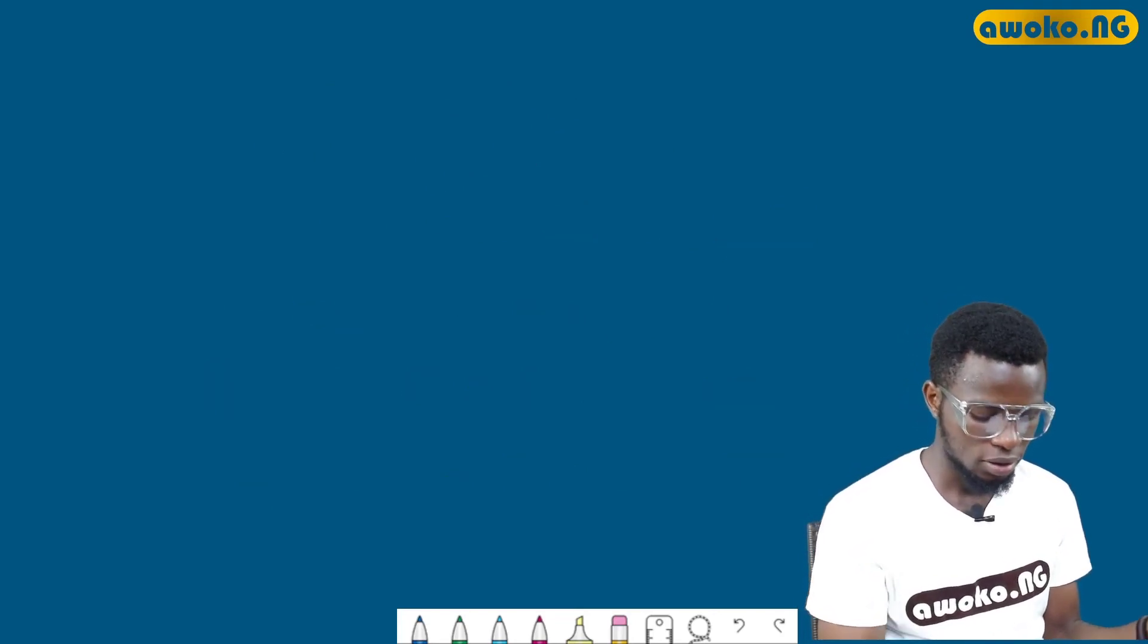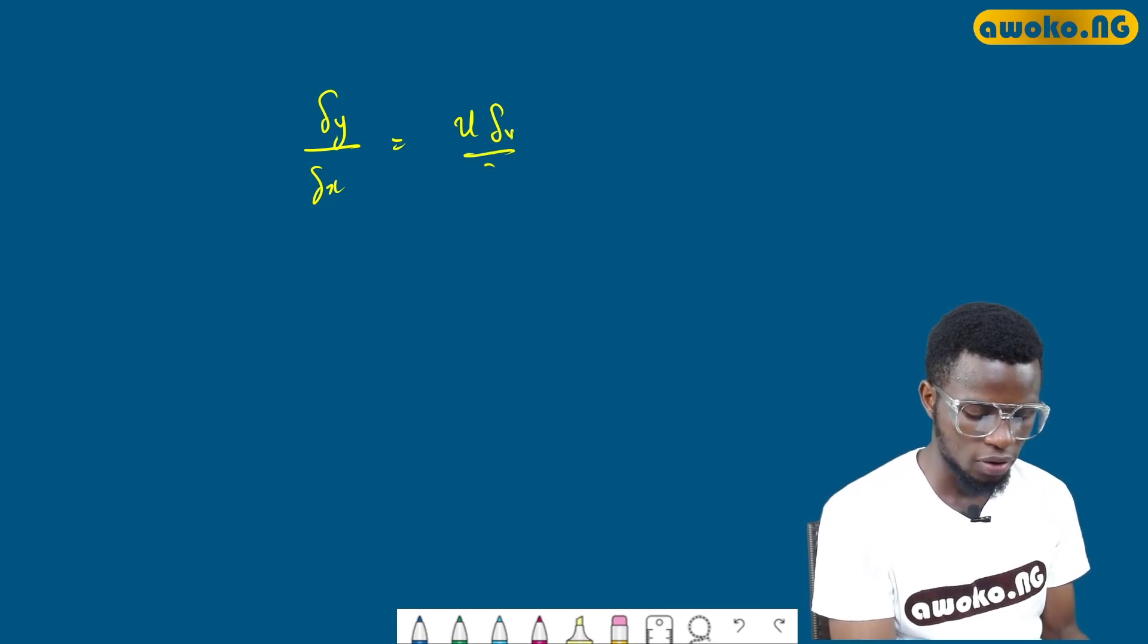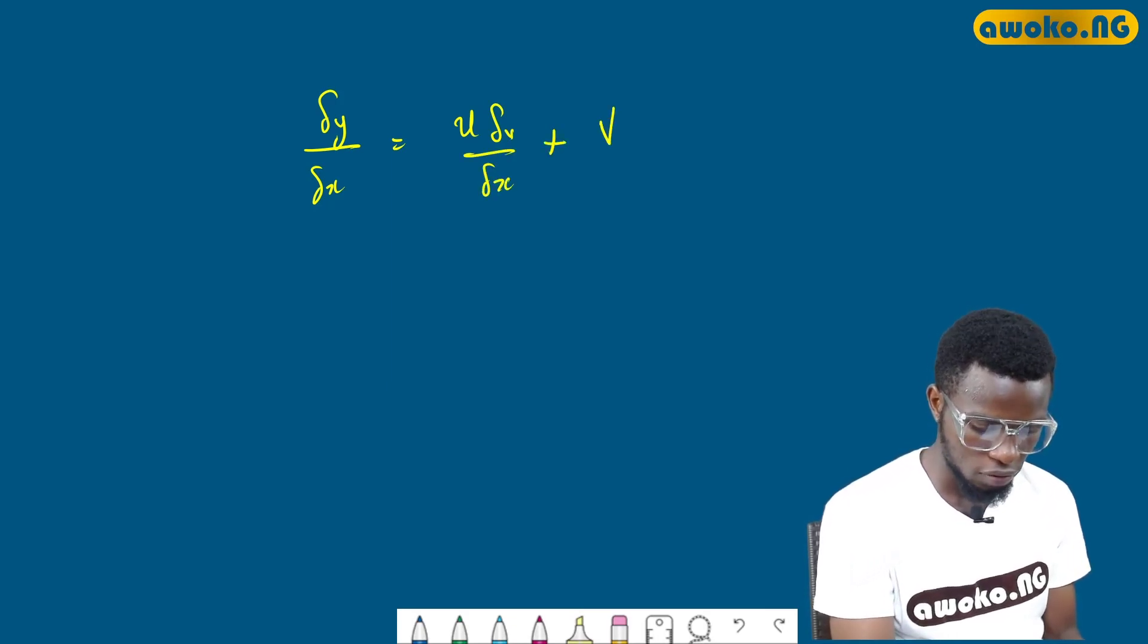dy/dx equals u(dv/dx) plus v(du/dx) plus du(dv)/dx.